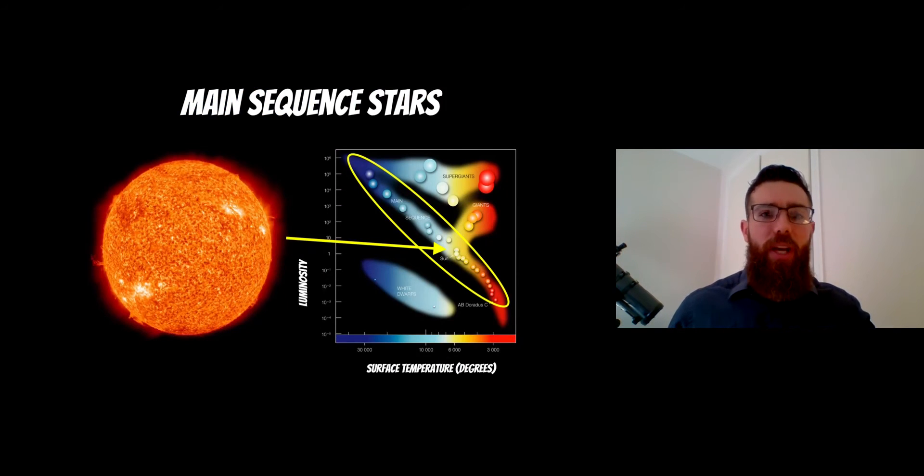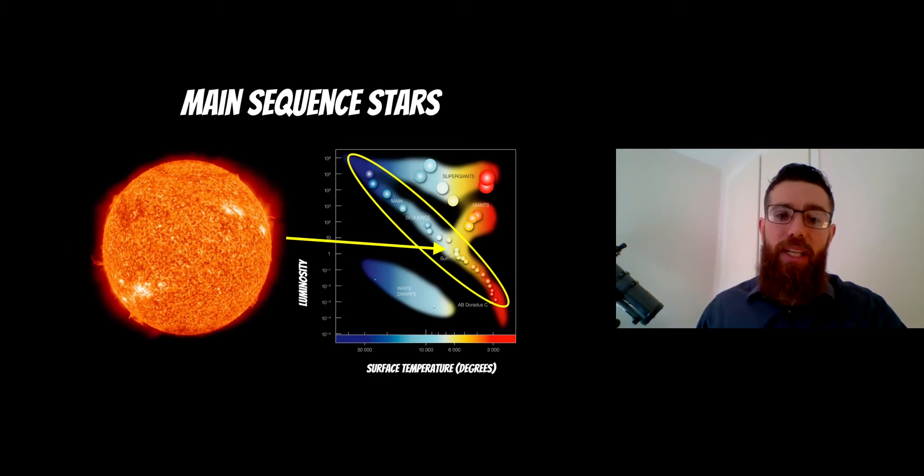So before we do that let's just recap on main sequence stars. So if you're not familiar with the HR diagram which is on the right just check the video at the top. On this HR diagram down the middle in a diagonal you have the main sequence. So these are stars that are fusing hydrogen in their core to helium and this is the most stable part of their evolution and where they sit on that main sequence is a function of their mass. So the lower mass stars sit towards the lower right and the largest stars will sit towards the upper left and it's those upper ones that we're interested in for this particular video.